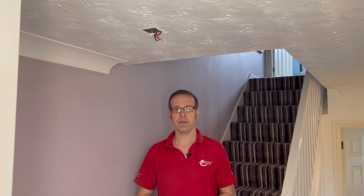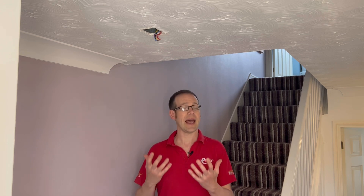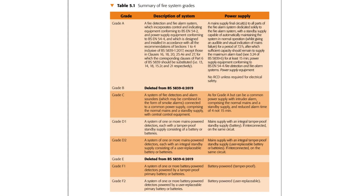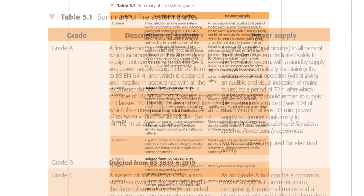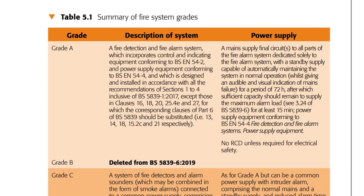The grades are defined by the letters A through F, although there are a couple of letters missing that used to define systems now removed. The technical description of a Grade A system is: a fire detection and fire alarm system which incorporates control and indicating equipment conforming to BS EN 54-2 and power supply equipment conforming to BS EN 54-4, designed and installed in accordance with all the recommendations of sections 1 to 4 inclusive of BS 5839-1 of 2017.